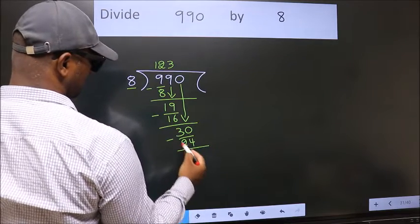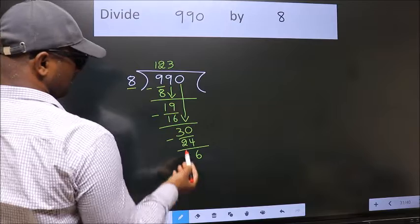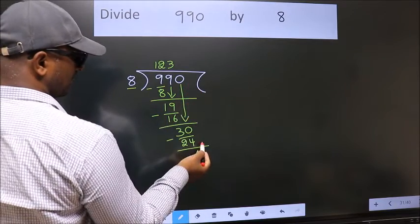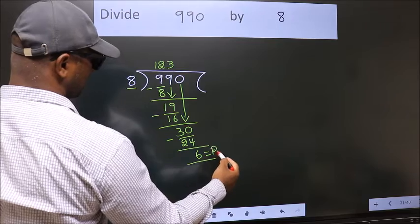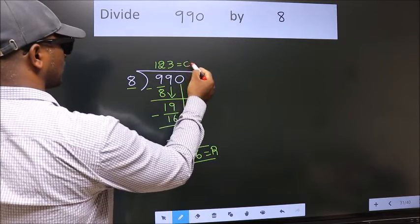Now, we subtract. We get 6. No more numbers to bring it down. So, we stop here. This is our remainder. This is our quotient.